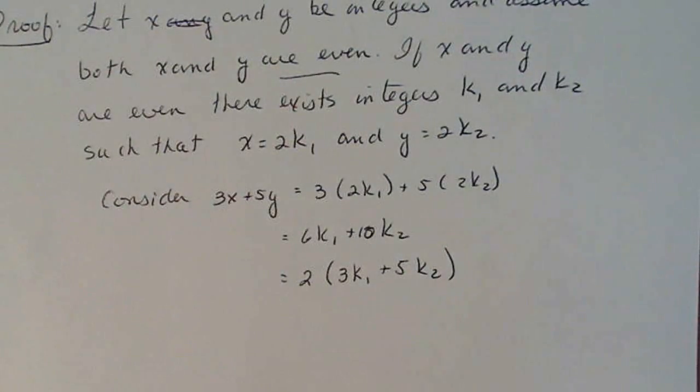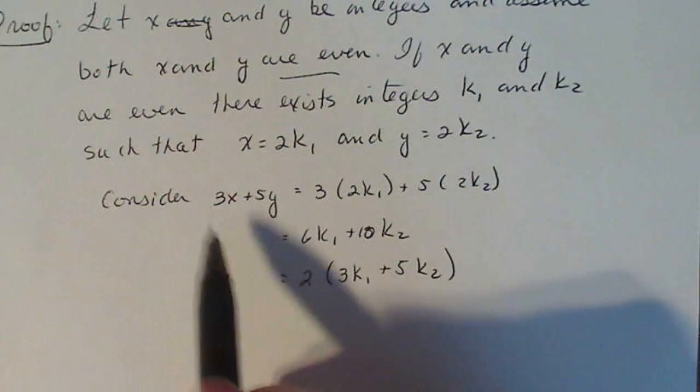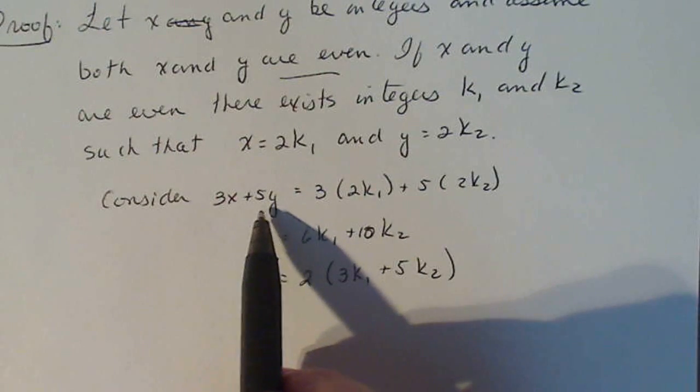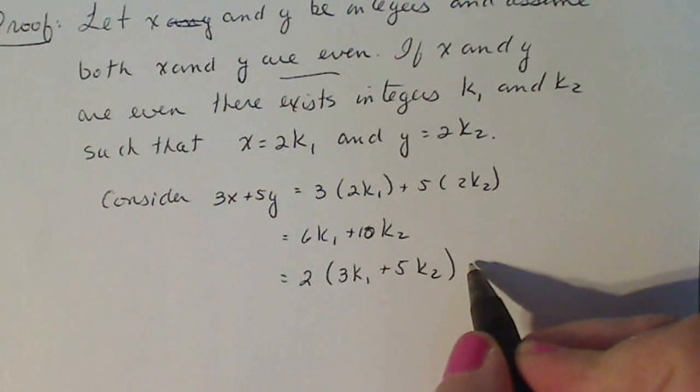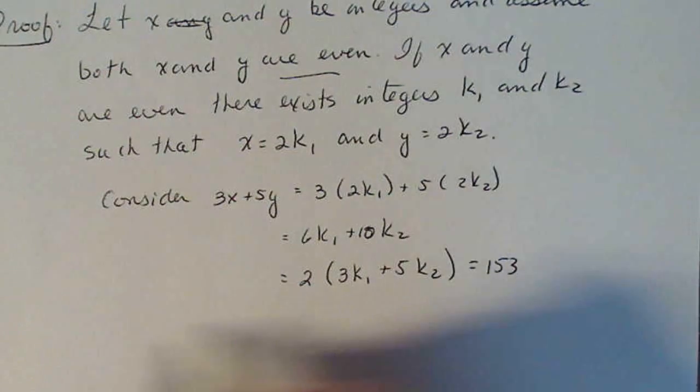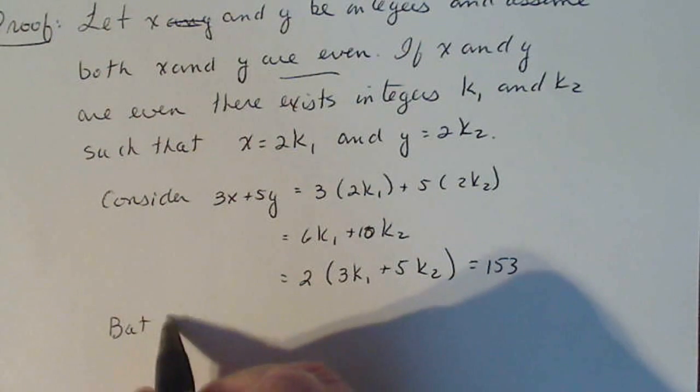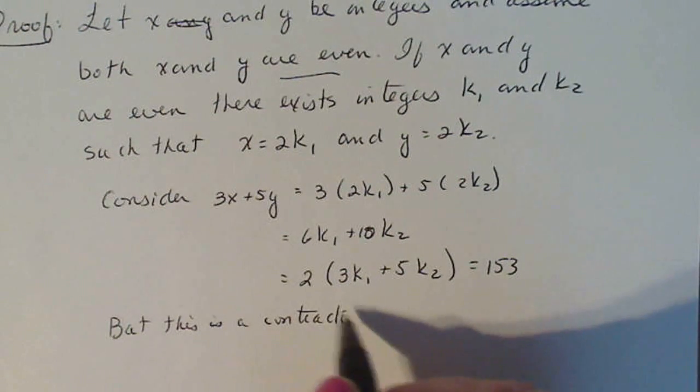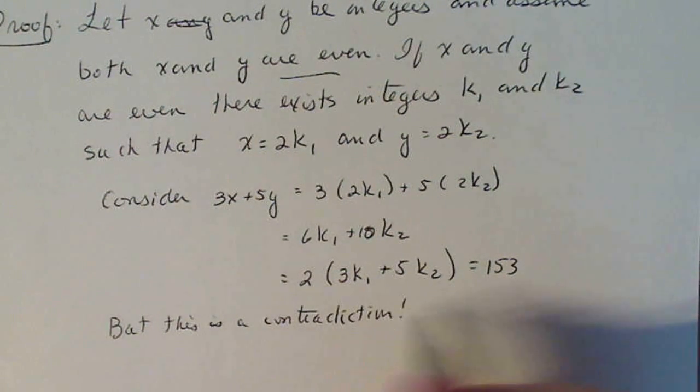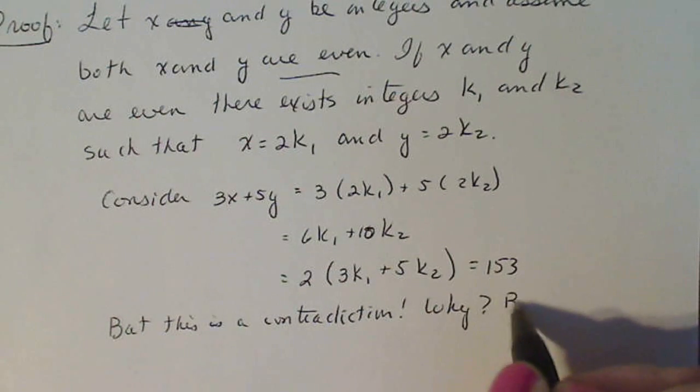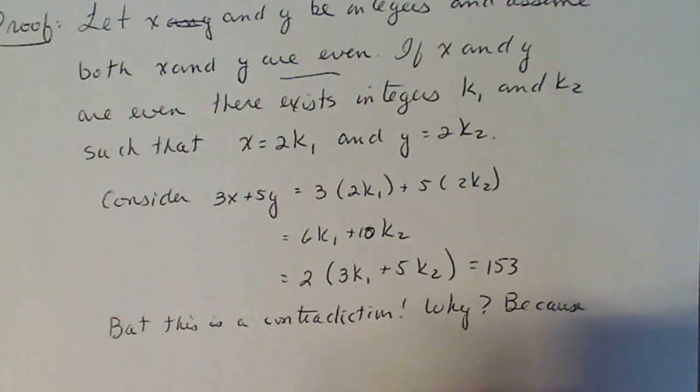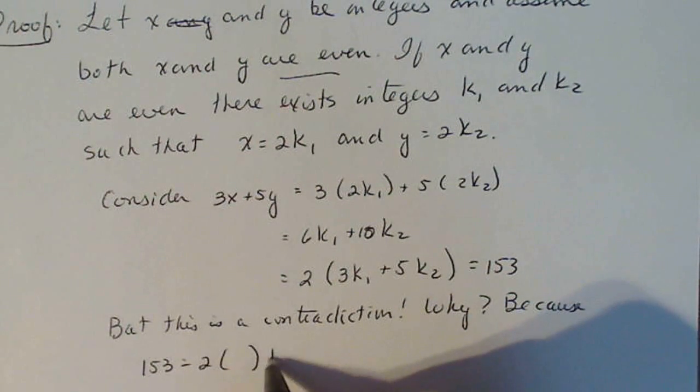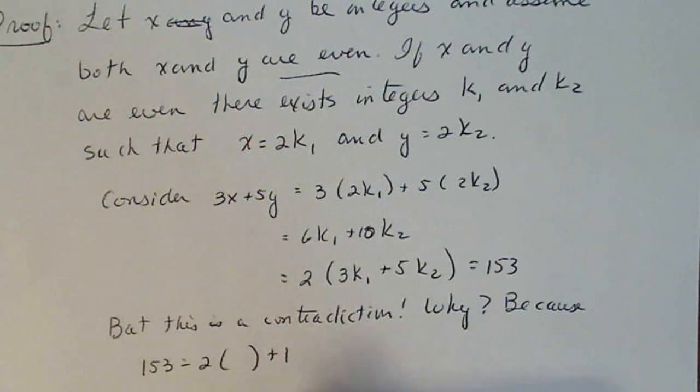Now according to the theorem, this is supposed to equal, because x and y share this relationship, according to the theorem, this is supposed to equal 153, but this is a contradiction. Why? Because I can write 153 as two times a number, but I have to add one to it in order for that to happen.